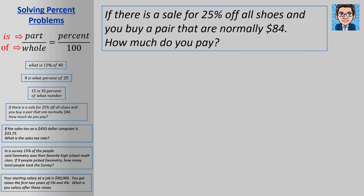Okay, and the next problem, if there's a sale for 25% off all shoes and you buy a pair that's normally $84, how much do you pay? So we can calculate what that discount is. So we've got an $84 pair of shoes. We can multiply it by 0.25. 25% is the same as 0.25, and we're going to get $21.